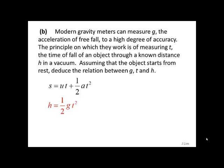Using the kinematics equation, we have x equals ut plus half at squared, so h equals half g t squared.